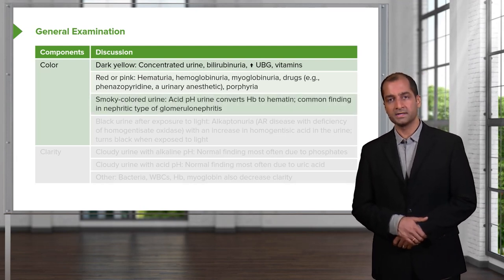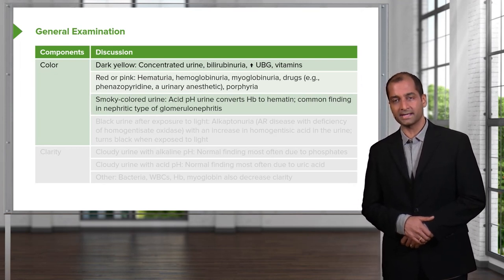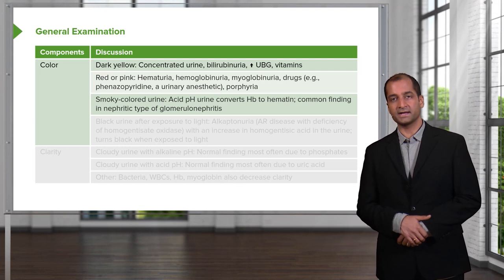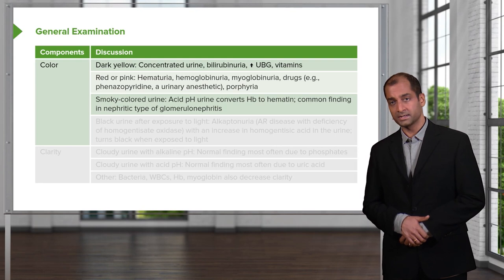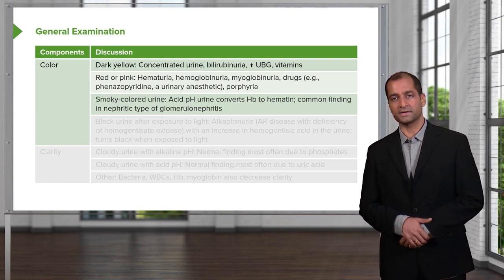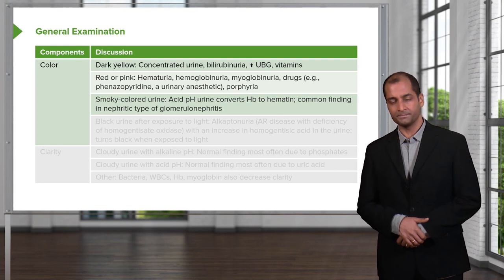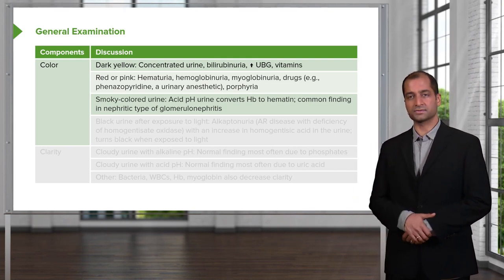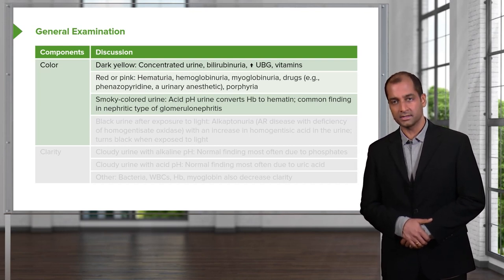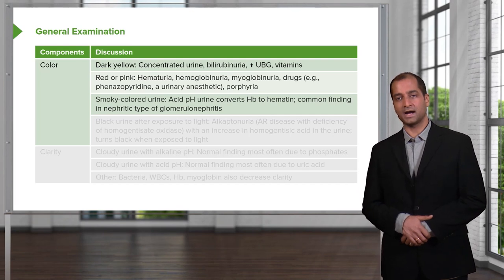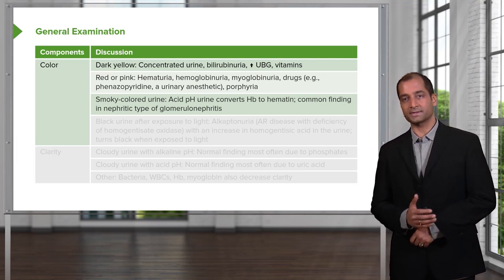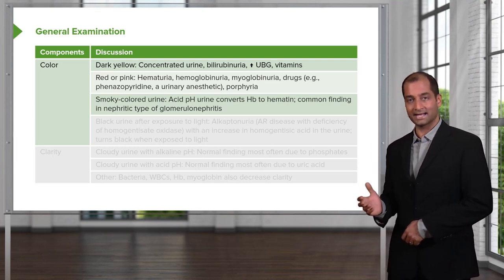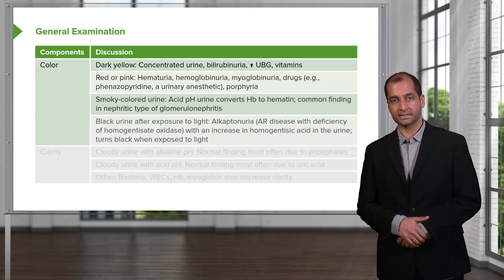What if it was smoky colored urine? Acid pH. Urine converts the hemoglobin into hematin. It's a common finding in nephritic. If you're dealing with nephritic, you should be thinking something along the lines of perhaps IgA nephropathy, because that would be the most common type of glomerulonephritis. I will have you highlight in your head the letter H for nephritic. That H means hypertension, hematuria. It could mean that you have smoky colored urine. Hematin is what you're paying attention to.